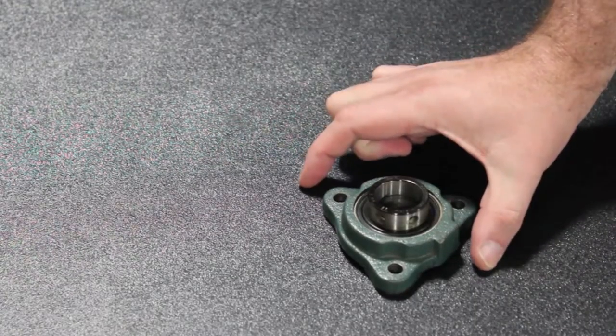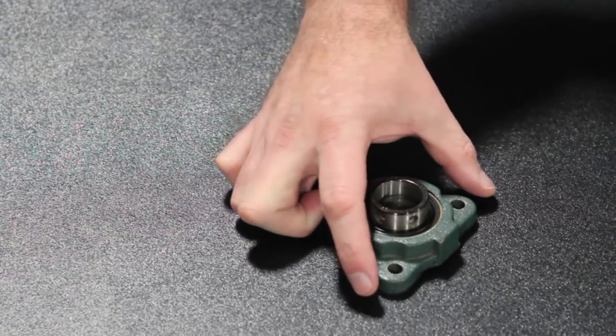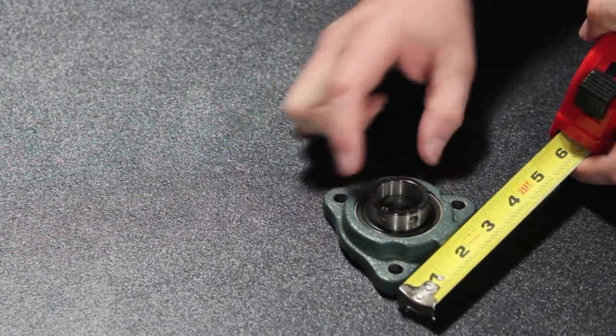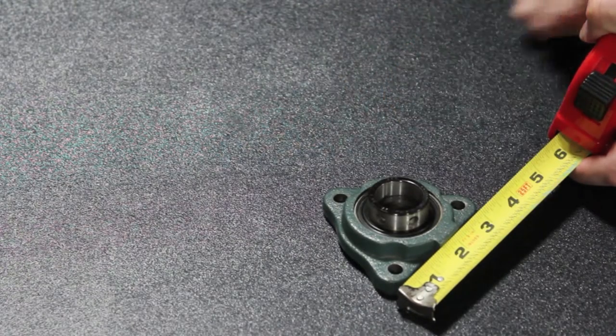Next, we need to find the length and width of your part. On this bearing, all the sides are the same length, meaning that these two measurements will be the same.